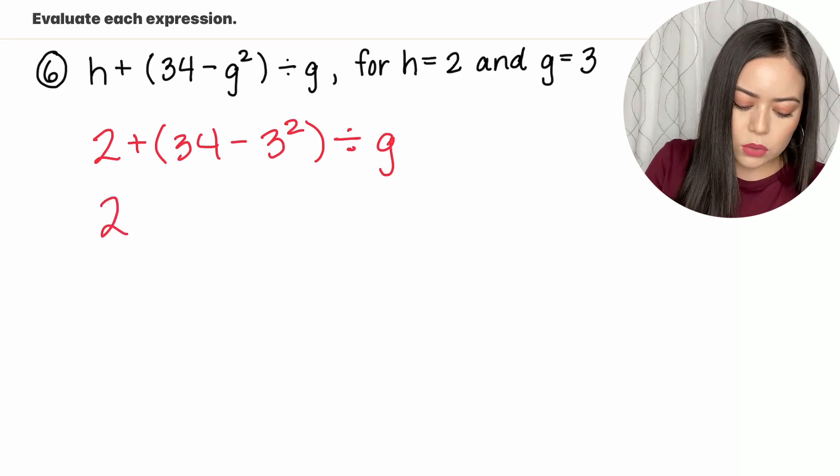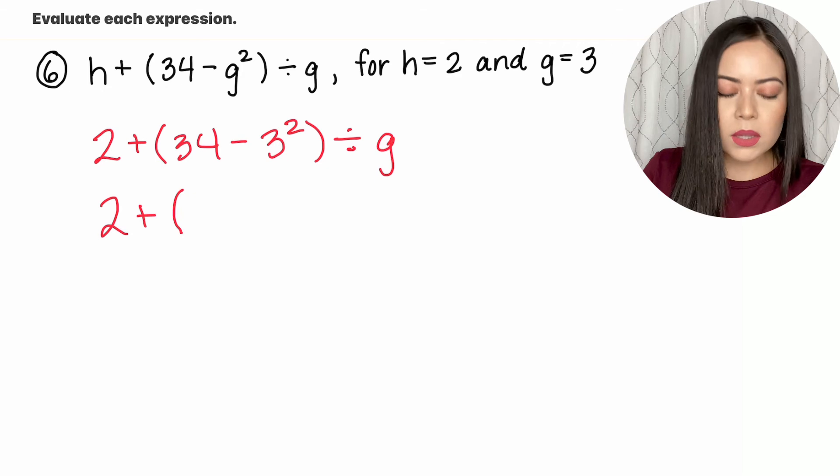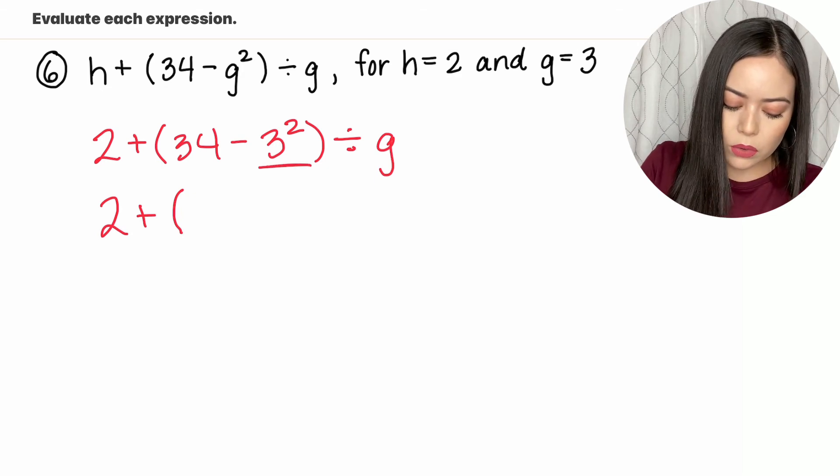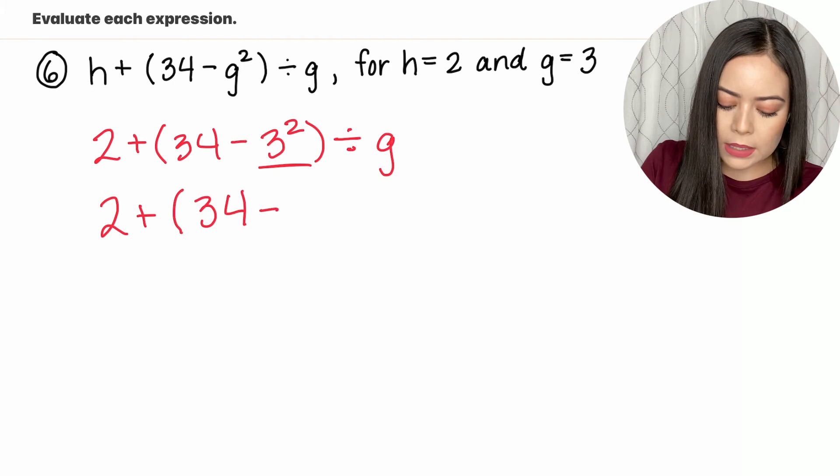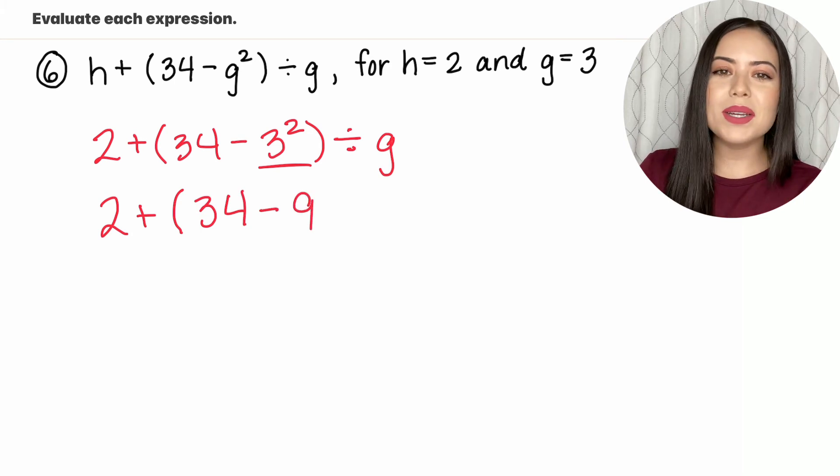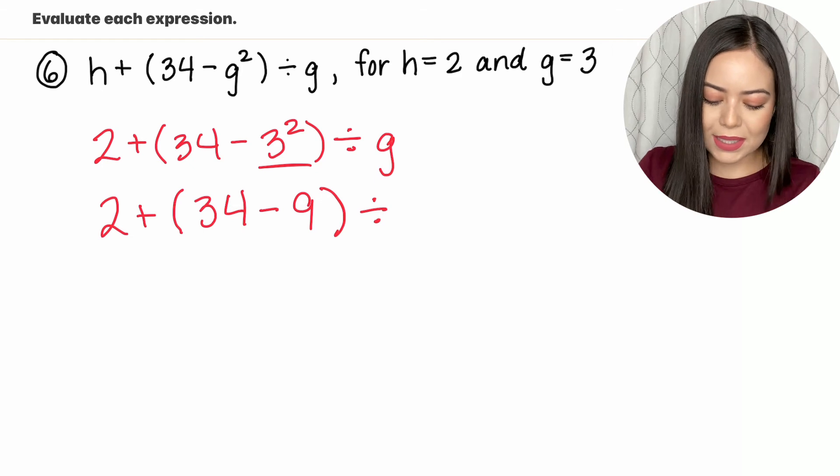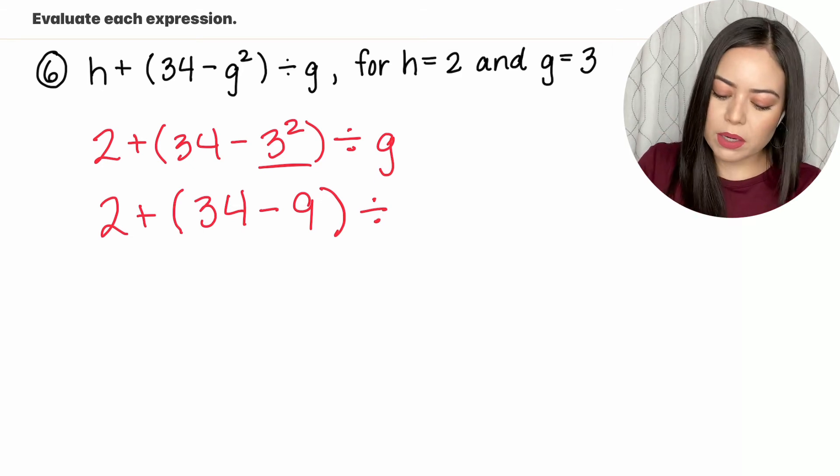We're just going to take it step by step. According to PEMDAS we have to perform what's inside the parentheses first. So we have 2 plus, now within the parentheses we have an exponent so let's simplify that, the 3 squared. So 34 minus 9 since 3 times 3 is 9 divided by, oops and I didn't plug in g. We said g is 3 so divided by 3.